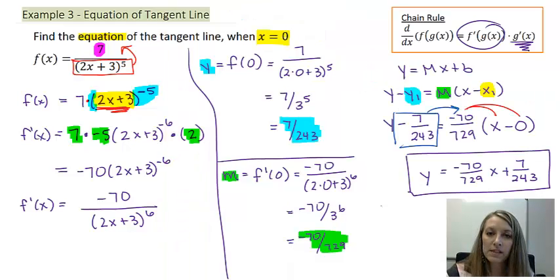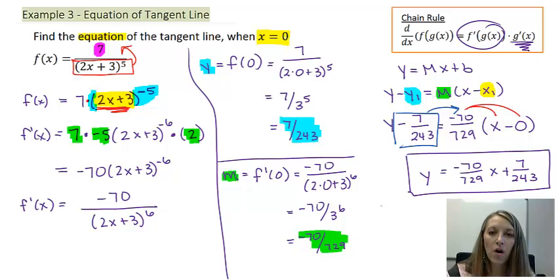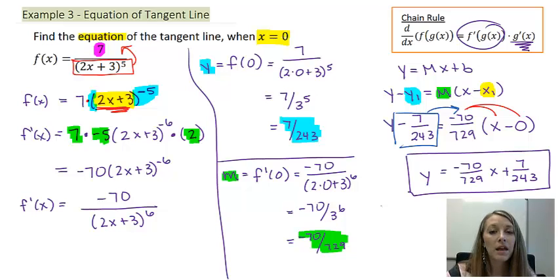So I've done a couple of examples using the chain rule, and in this one I even applied it to finding a tangent line — a process we've used quite a few times before. In the next video, I'll move on to using the chain rule combined with larger rules like the product rule and quotient rule, which we were able to avoid here, but won't always be able to avoid.